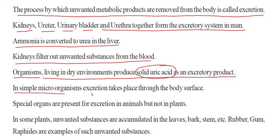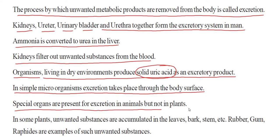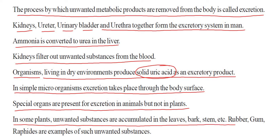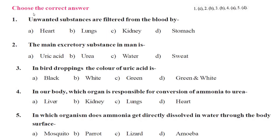In simple microorganisms, excretion takes place through the body surface. In animals, special organs are present for excretion, but not in plants. In some plants, unwanted substances accumulate in the leaves, bark, stem, etc. Examples include rubber and gum.